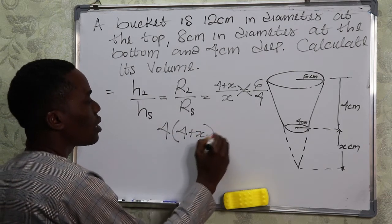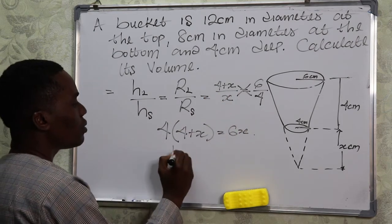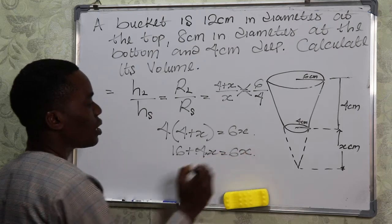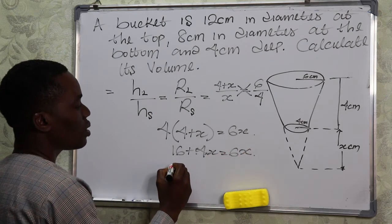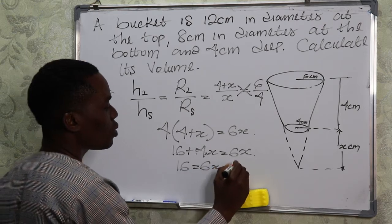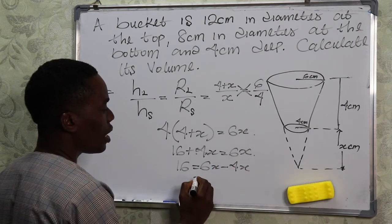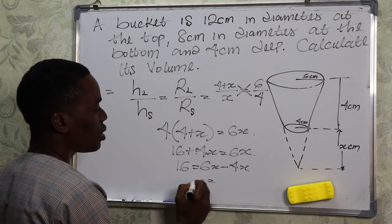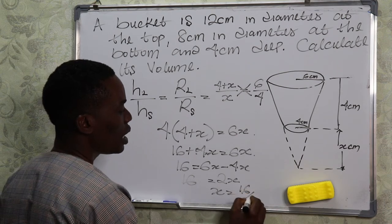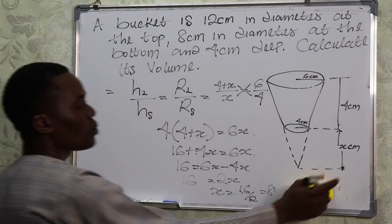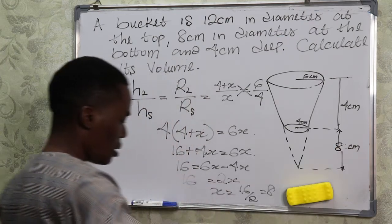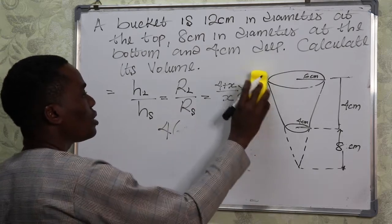Cross-multiplying gives us: 4(4 + x) = 6x, which expands to 16 + 4x = 6x. Rearranging: 16 = 6x − 4x = 2x. Therefore x = 16 ÷ 2 = 8. So x = 8 centimeters.